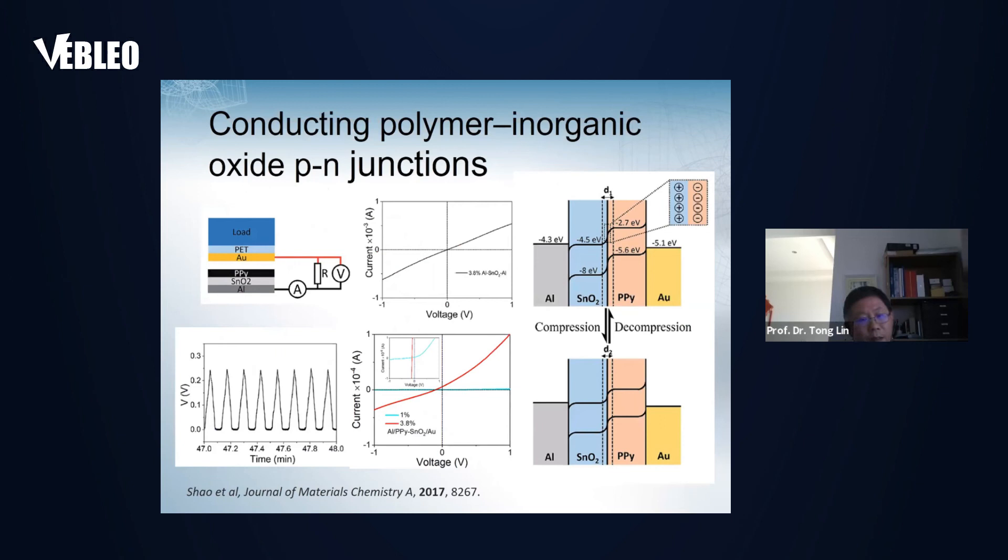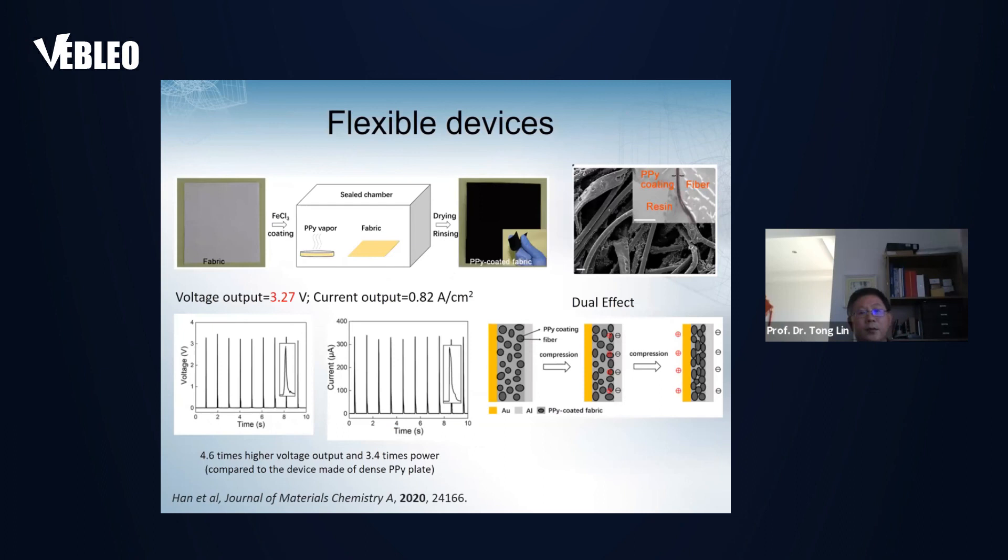We also found if conducting polymer forms a PN junction with other semiconductor, for example, inorganic oxide, the device still has a DC energy generation ability. Here we use tin oxide and PPY to form a PN junction. This PN junction can generate 0.25 volt pulse signal under compression. The mechanism is quite similar to the Schottky junctions.